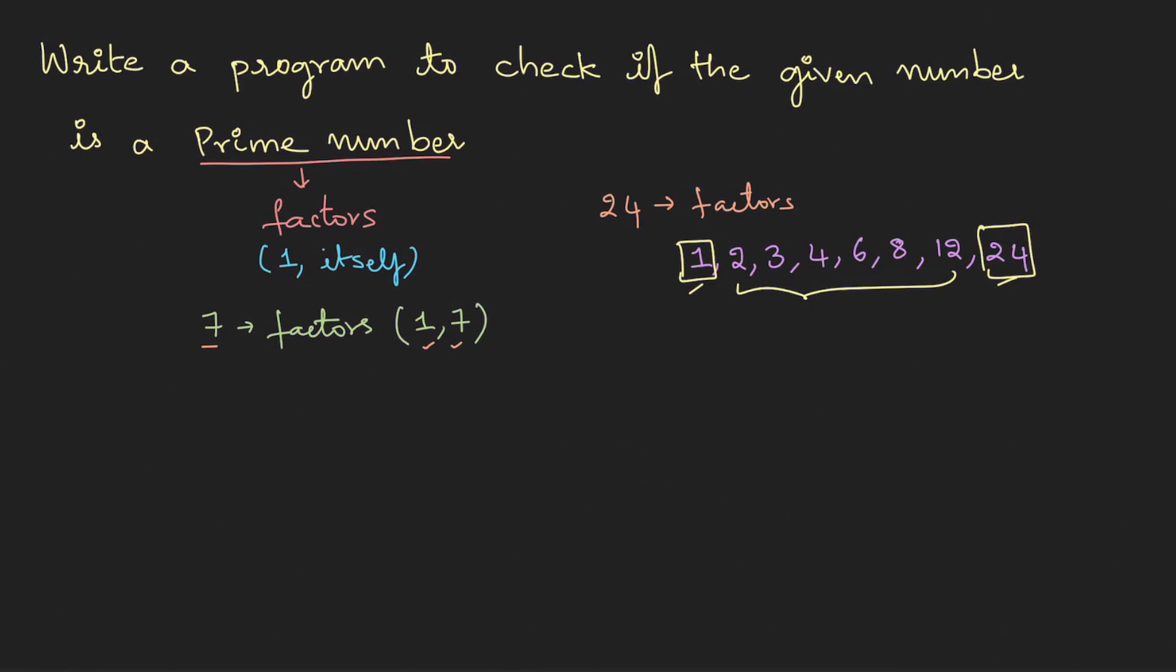So the logic to identify prime number is basically if we can check whether the number is divisible by any other number other than 1 and 24. If yes, then it becomes a non-prime number or a composite number, else it's a prime number. I need not start from 1, rather I'll start from 2. If you closely observe, the last number other than 24 is always half of the number, so I can go till n by 2.